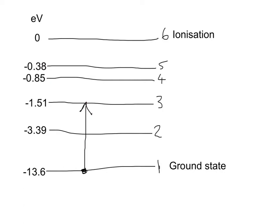Our atom is now excited and sitting at energy level E3. At some point it's going to release the energy back out, and what happens is the atom drops back down to a lower energy level. There are two options: it could drop back down to level two, or all the way back down to level one. Let's look at it dropping back down to level two first.